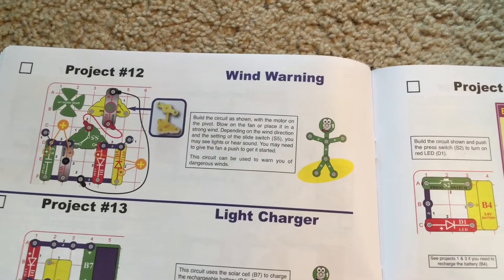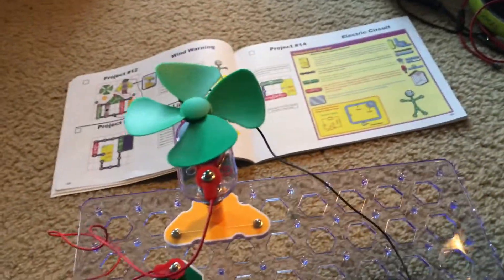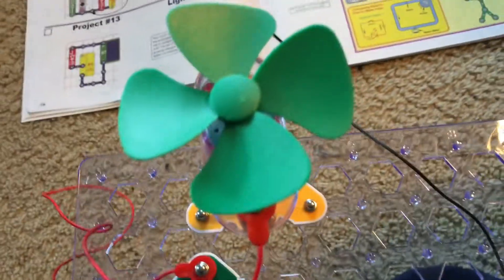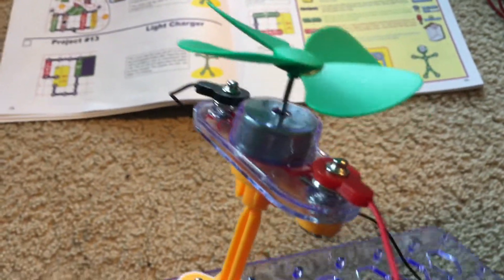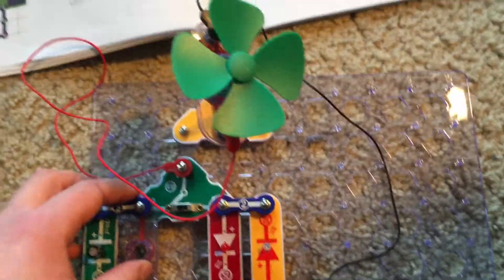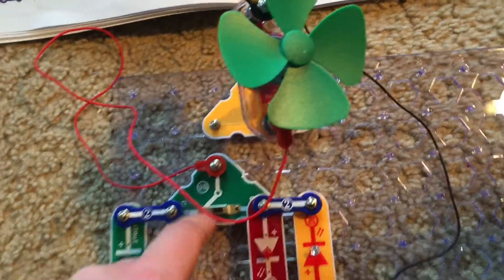Project 12 wind warning. This circuit acts like a wind detector to warn you of very high winds. We will have the motor on its pivot with the fan attached and depending on the direction of the wind as well as whether the slide switch is off or on you may see lights or hear sound.